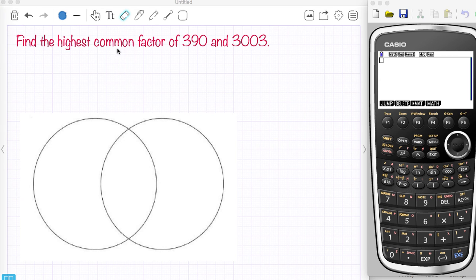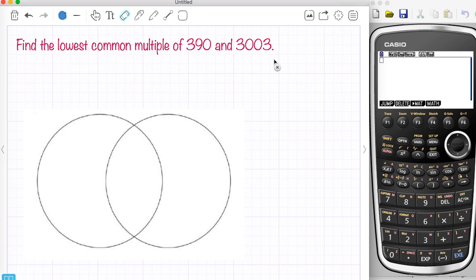This video is going to go through the highest common factor of two numbers and the lowest common multiple of two numbers using Venn diagrams.